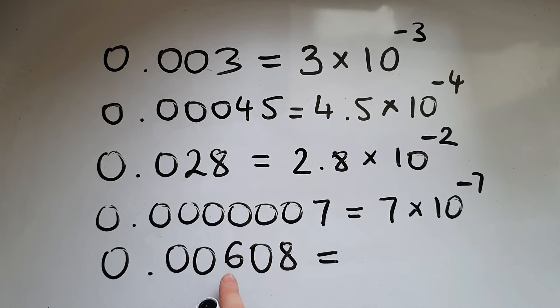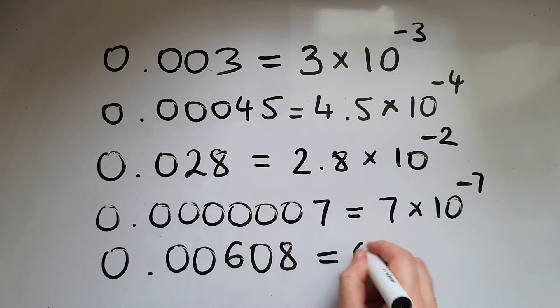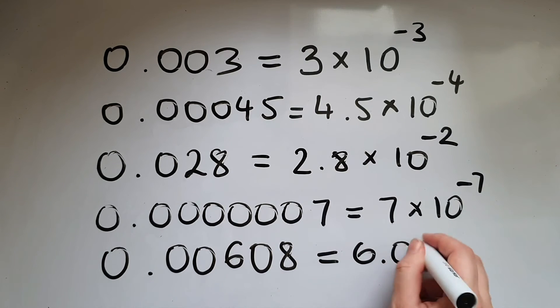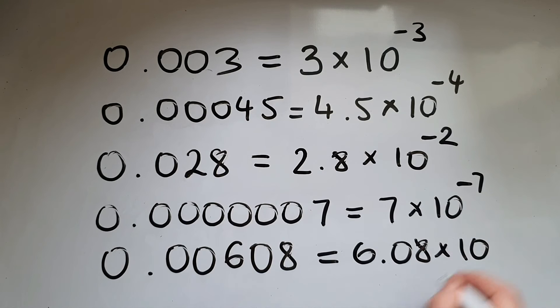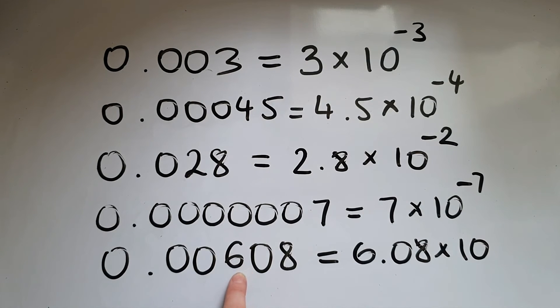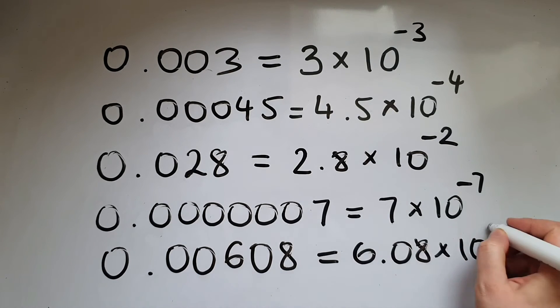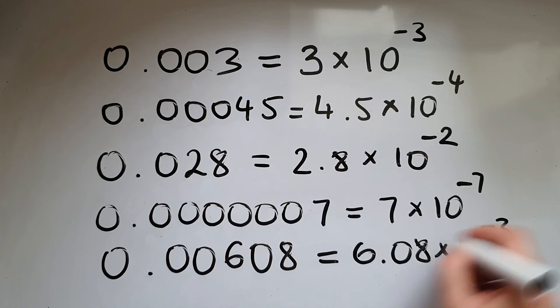We're going to write 0.00608 as 6.08 times 10 to the power of negative 3.